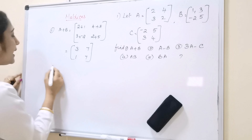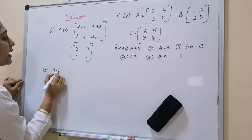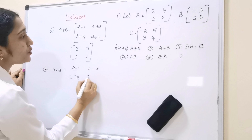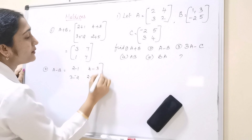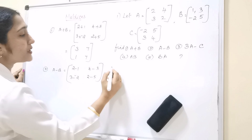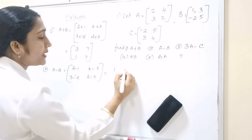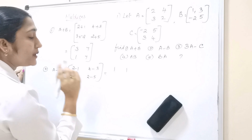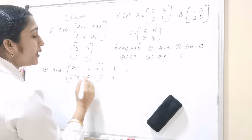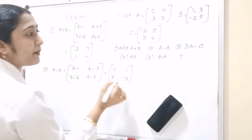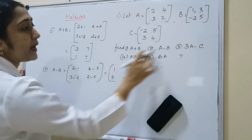Next we have to find A minus B. A minus B is equal to [2-1, 4-3; 3-(-2), 2-5]. So that gives us: 2 minus 1 is 1, 4 minus 3 is 1, 3 minus minus 2 means 3 plus 2, that is 5, and 2 minus 5 is minus 3. So A minus B equals [1, 1; 5, -3].